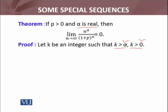If α ≤ 0, then any positive integer k serves. If α is negative, any positive integer works. If α is a positive real number, then by the property that every real number lies between two consecutive integers, we will always be able to find an integer k satisfying both k > α and k > 0.